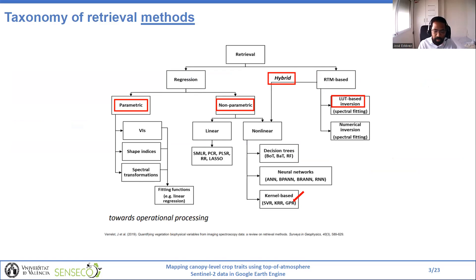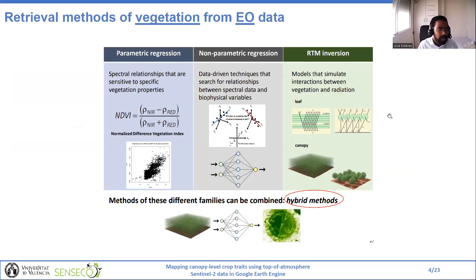When we talk about retrieval methods, we have parametric regression, typically used to obtain a vegetation index, and non-parametric regression based on data-driven techniques where we can find machine learning regression algorithms — for example, Gaussian Process Regression or GPR. On the other hand, we have retrieval methods based on radiative transfer models that traditionally use a look-up table-based inversion. For vegetation retrieval specifically from Earth observation data, methods of different families can be combined to create the so-called hybrids. In this case, data from physically-based models that simulate interactions between vegetation and radiation serves as input for non-parametric methods, which learn the relationships between spectral data and biophysical variables describing the status and vitality of vegetation.